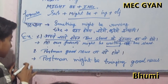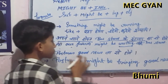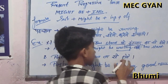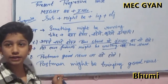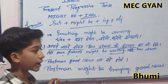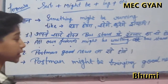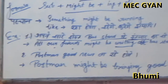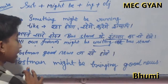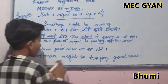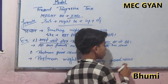My second example: we don't know if they will send good news or bad news. We don't know what the postman will bring. So in English we say: 'Postman might be bringing good news.'